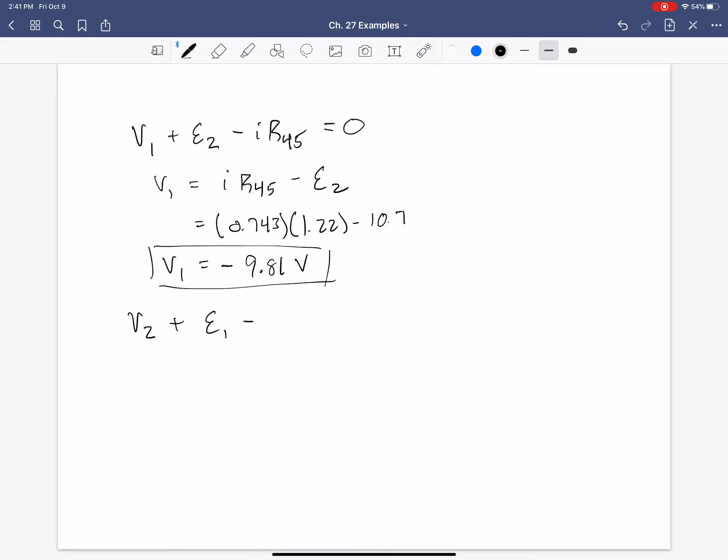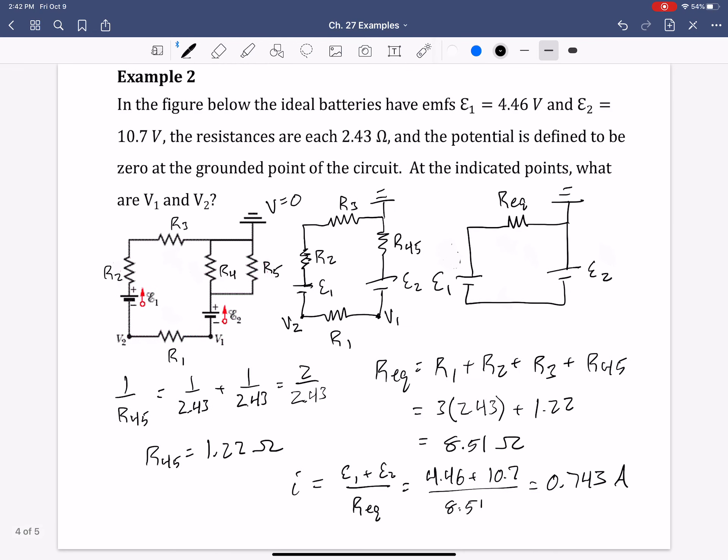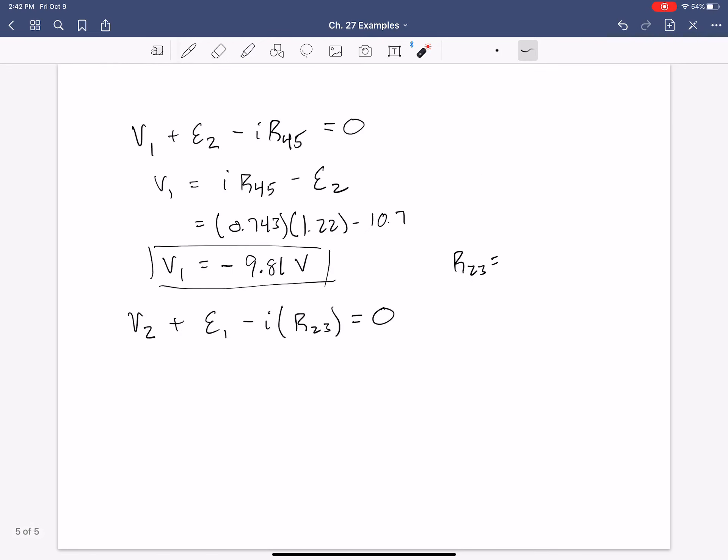And then, if you want to combine those resistances, R2,3, you can, and you should be at zero at the ground. So, we'll need to calculate what R2,3 is really quickly. Since they're in series, it's simply 2.43 plus 2.43, which is 4.86.